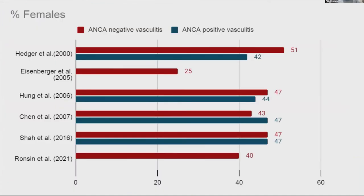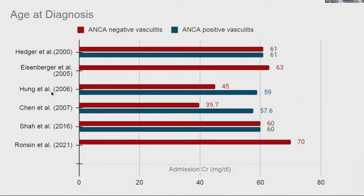Looking across studies, red represents ANCA-negative vasculitis and blue represents ANCA-positive vasculitis. Most cohorts had at least 40% females, except the French study with only 25%. The Chinese and Taiwanese cohorts were much younger — 37, 39, and 45 years old — while most other cohorts were 60 to 70 years old.